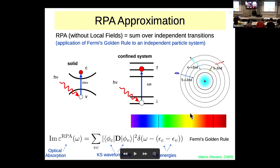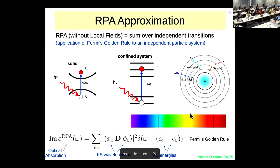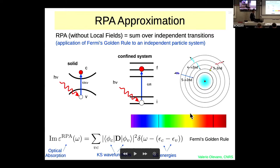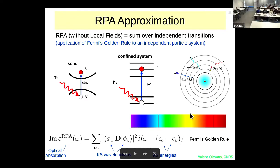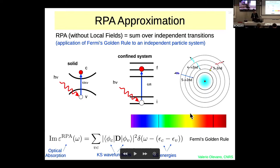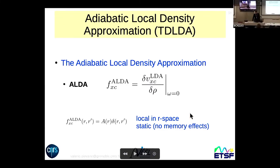Selection rules apply to transitions: the matrix elements of the dipole operator can be zero, making a transition strictly forbidden. For example, in the hydrogen atom you cannot make a transition with Δl ≠ 1 — the matrix element for s-to-s transitions is zero. In solid-state systems the orbital character is less well-defined, but these atomic selection rules still have some correspondence in solid-state physics.